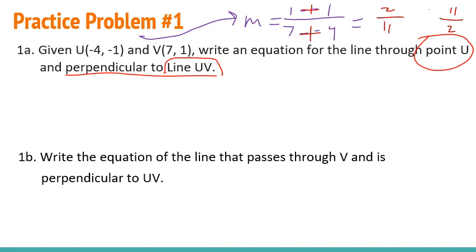So let's give that a shot. So through point u, let's use point slope form. So we're going to say y minus y1, so y minus negative 1, equals the slope, which we're going to use, which is negative 11 over 2, times x minus x1. And then if we solve that out, we have the equation. We just need to simplify it.